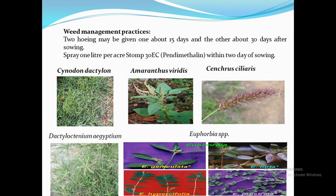Weed Management: Preventive measures include using clean seeds, always using well-decomposed organic manure, and keeping irrigation channels clean and free from weeds. Two hoeings may be given — one about 15 days and the other about 30 days after sowing. Spray 1 liter per acre of Stomp 30 EC or pendimethalin within two days of sowing. Common weeds of mung bean include Cynodon dactylon, Amaranthus viridus, Cenchrus ciliaris, Euphorbia species, etc.